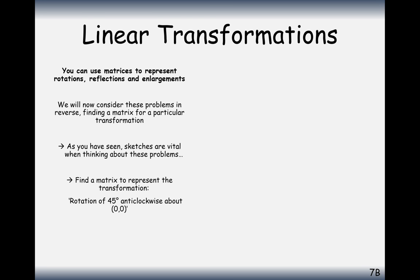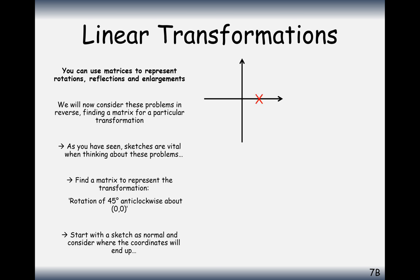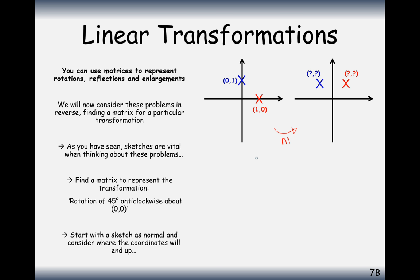Now for a tricky one: rotation 45 degrees anticlockwise around the point (0, 0). We want to find the matrix that represents this transformation. Starting with our standard (1, 0, 0, 1) coordinates and rotating anticlockwise by 45 degrees, the red point moves up and the blue point swivels round. We need to know the final resting positions so that after we've transformed by the matrix M, we can identify the image coordinates and then that's our answer.